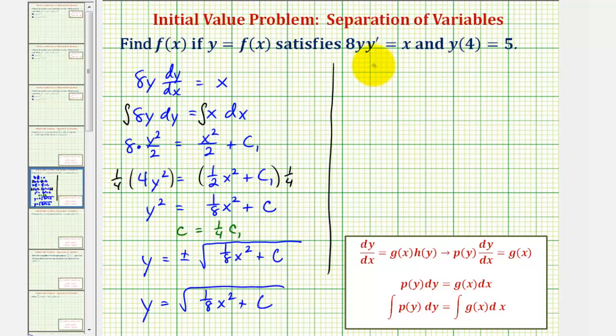So if we know our function must be in the form of y equals the square root of 1/8 x to the second plus c, and we also know y(4) equals 5, meaning our function contains the point (4, 5), we can substitute 4 for x, 5 for y, and solve for c, the constant. And this will give us our particular solution.